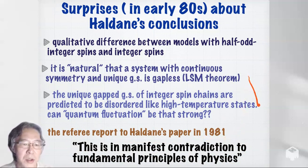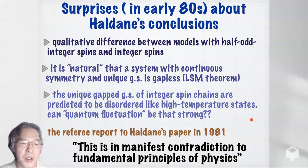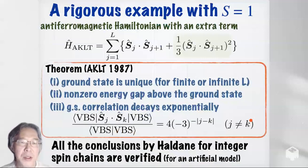Haldane wrote his first paper in 1981 discussing these conclusions, but the referee said this is a manifest contradiction to fundamental principles of physics, and the paper was rejected and never published. After this, many evidences appeared that Haldane was correct, and now everybody believes what Haldane said.